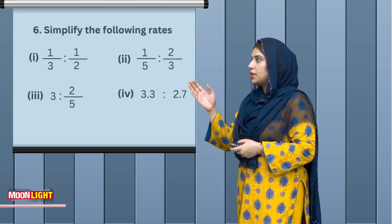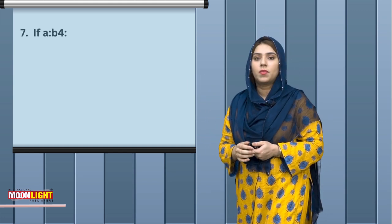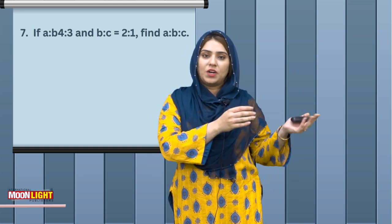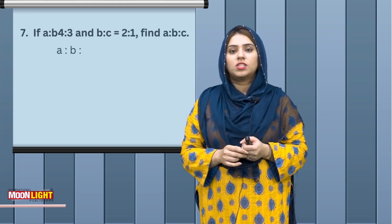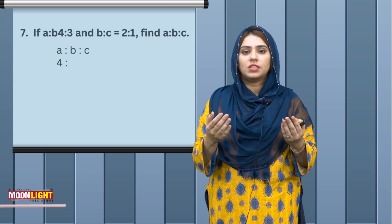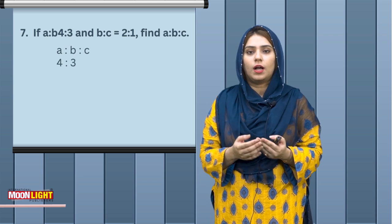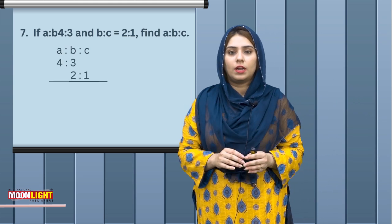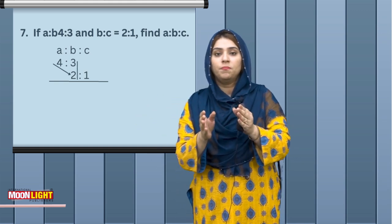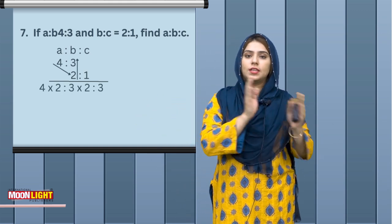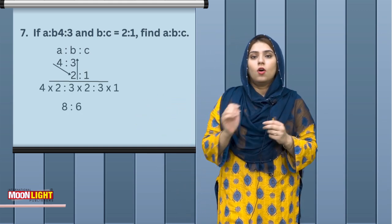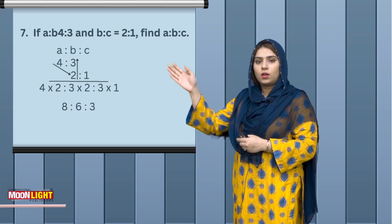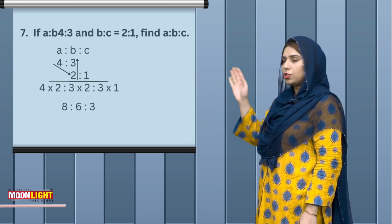If you look at question number 7, you have a continued ratio and you have to find the combined ratio. When you have two or more quantities, you have to relate them. Like A ratio B, and B ratio C — you relate the values. For example, B ratio C, then you have to find A ratio B ratio C.